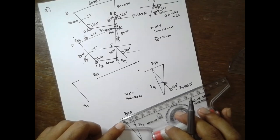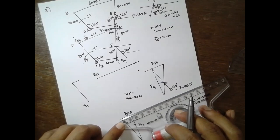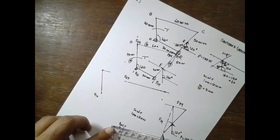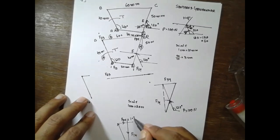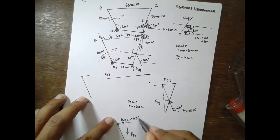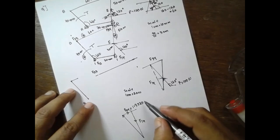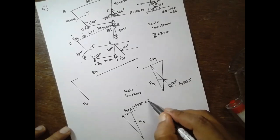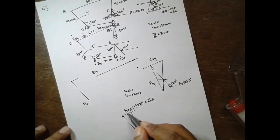Measure this — it will be 1.3 or 1.4. I will consider 1.3 here. 1.3 into scale is nothing but: 1.3 into 20 is nothing but 26 Newton.